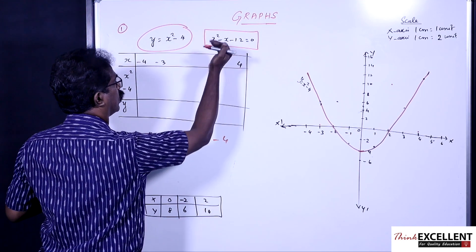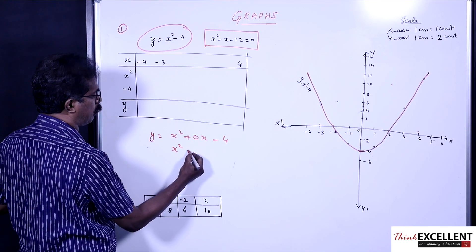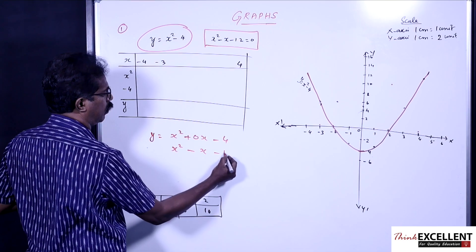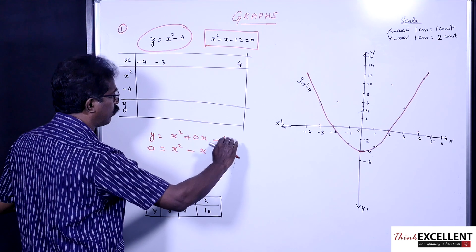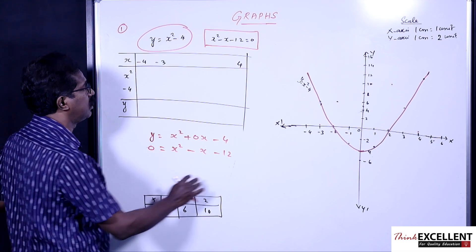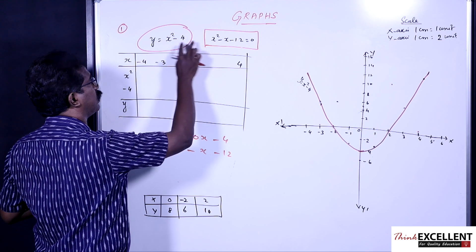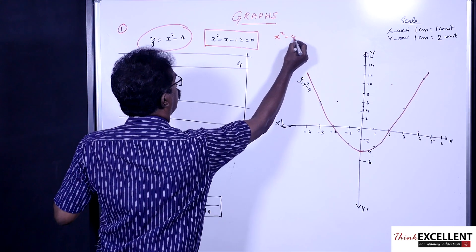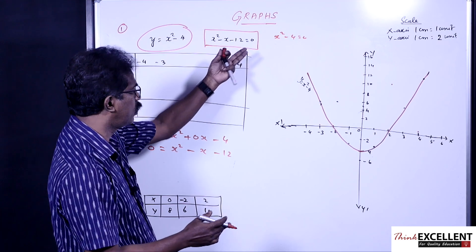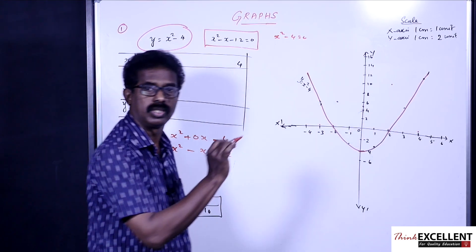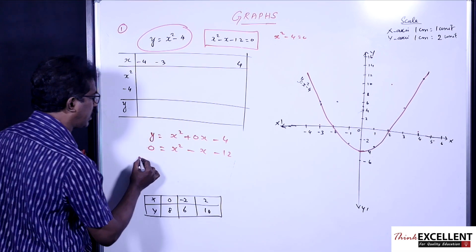Write below: x² - x - 12 = 0. So first at the top you write the graph equation, and below that the equation you're supposed to solve. Sometimes, if they give the same equation — x² - 4 = 0 — no need to do anything extra. The graph itself cuts at two places, so the solution would be x = -2 and x = +2. But if they give a different equation, you have to proceed this way — now subtract the two equations.